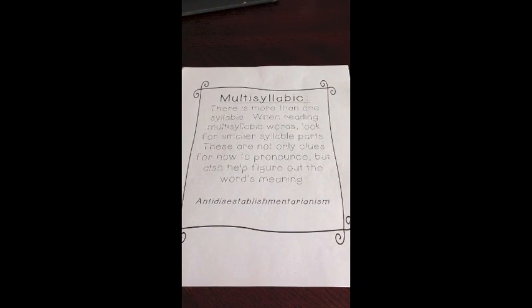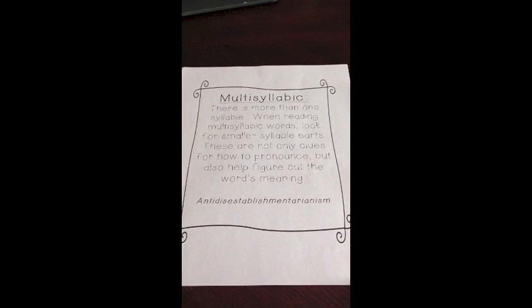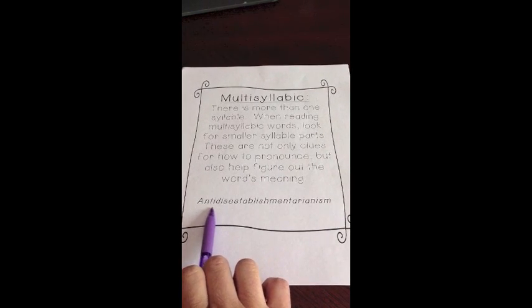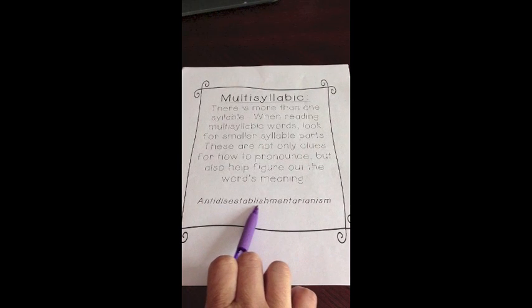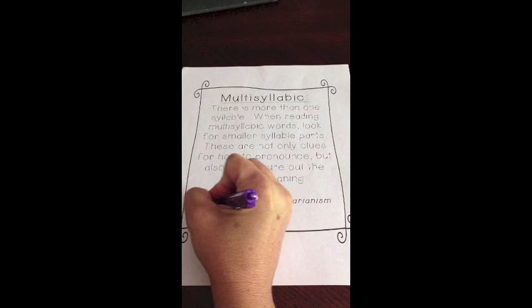What's great about breaking a word down into its syllable parts is that it not only is helping you pronounce the word or try to say it and read it correctly, but it can also lead to helping you figure out the word's meaning. Take this word for example. Antidisestablishmentarianism. There are a lot of word parts here.